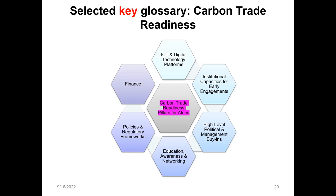Apart from institutions, we also talk about individual capacity. As officers from government and other actors, we need to be familiar with the terrain. We also need high-level political and management buy-ins in terms of carbon trade readiness — without our superiors buying into it, whether political or management, the whole venture will fall flat. There are also issues around education, awareness, and networking, as well as policies, regulatory frameworks, and finance. Other enablers — called means of implementation — include technology, finance, and education and awareness capacity building, which are all critical.